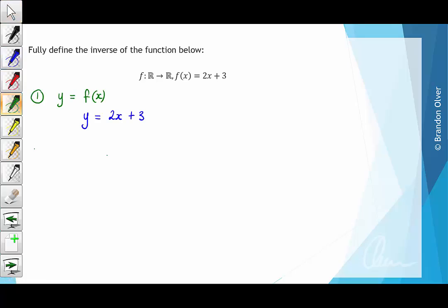Step 2 is to swap x and y to find the inverse. So when we do that, we have x equals 2y plus 3.